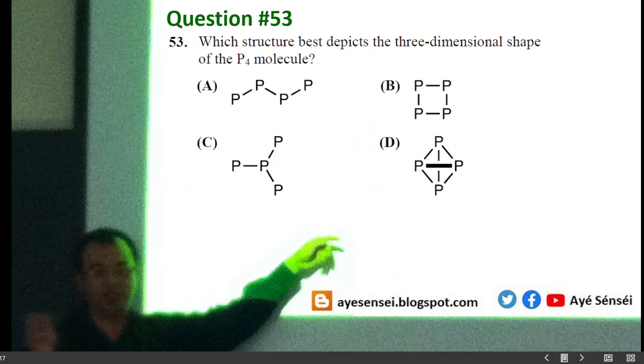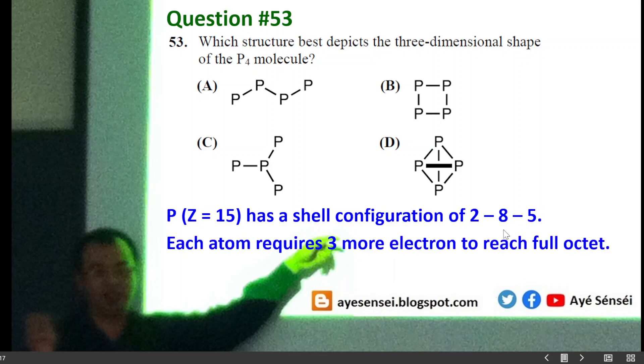And then last question 53: which structure best depicts the three-dimensional shape of the P4 molecule? So for phosphorus, first we have to write its configuration. Well, we don't have to write the detailed configuration, but shell configuration is already enough actually: 2-8-5. So from here we can see that each atom requires three more electrons to reach full octet. So it means that from the given structure we need to figure out which one satisfies this requirement, which is each atom requires three more electrons to reach full octet.